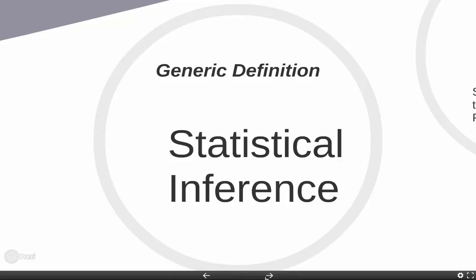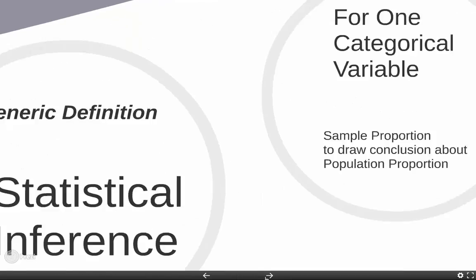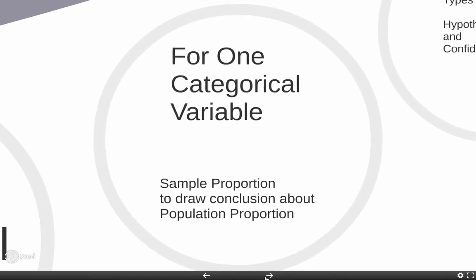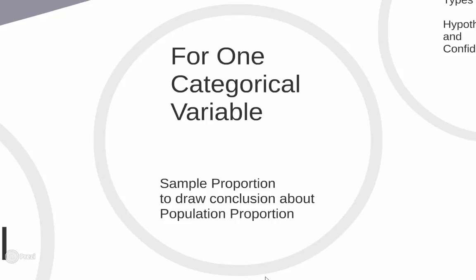The most important thing when using a sample is to make sure that it's an accurate representation of a population, because there are no statistical techniques capable of fixing a poor sample. In terms of one categorical variable, we use a sample proportion to draw a conclusion about a population proportion. Our sample proportion is represented by the statistic p-hat, and we use it to draw conclusions about the population proportion, our parameter of interest, denoted by p.